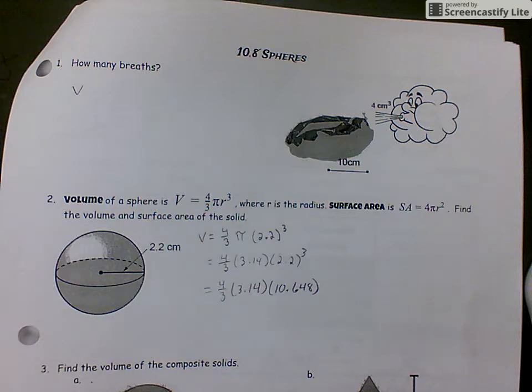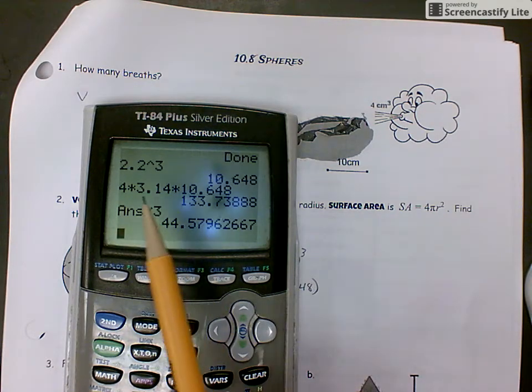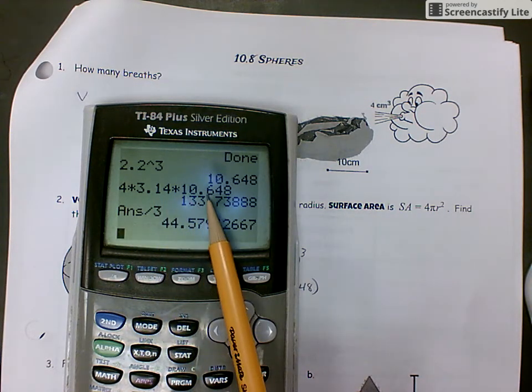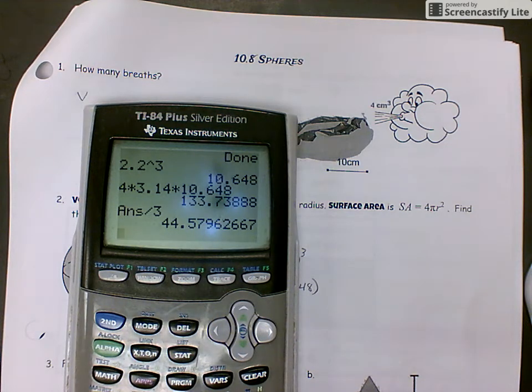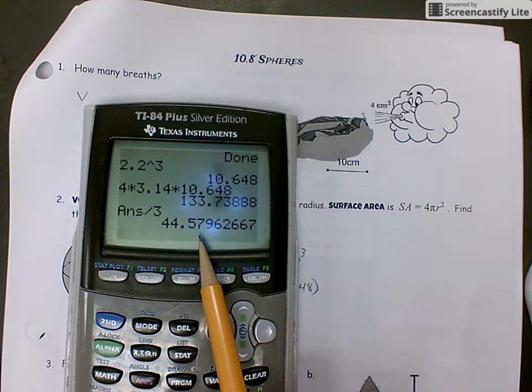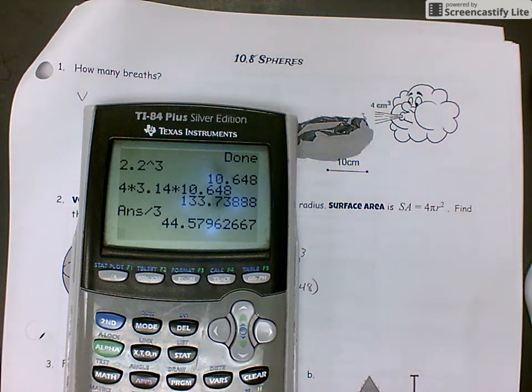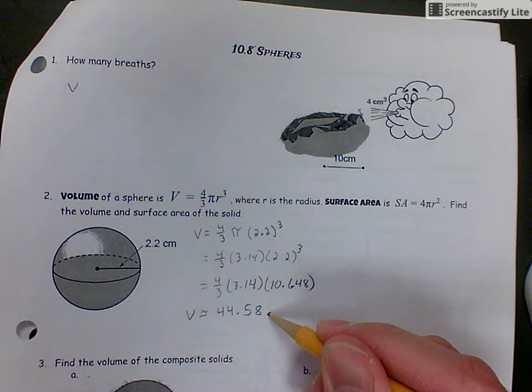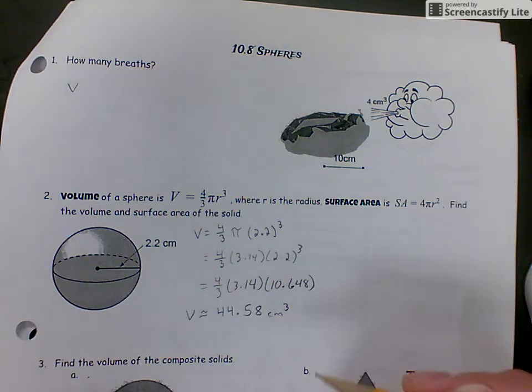Then it's just multiplying everything through. If you're not comfortable with fractions, put in your calculator 4 × 3.14 × 10.648, then divide by 3 at the end. You should get 44.58, and we'll label that cm³ because it's volume.